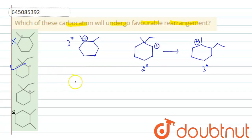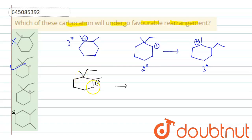The third one is already a tertiary carbocation. If it rearranges, it will again become a tertiary carbocation on one side. On the other side, if it rearranges, it will become a secondary carbocation. So there is no favorable rearrangement here; this will not undergo rearrangement.